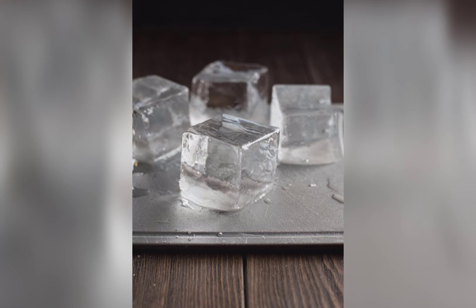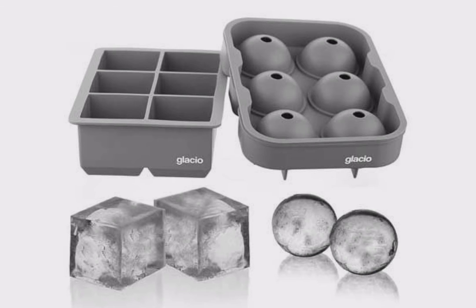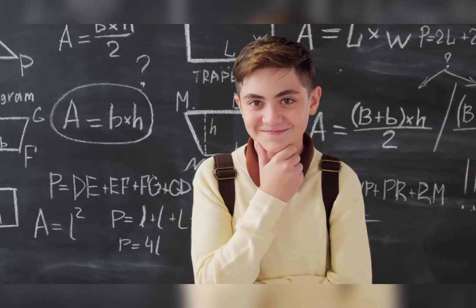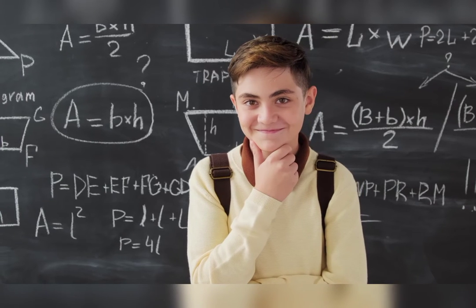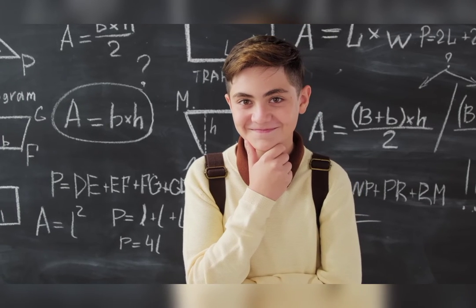Agar aap kabhi ek ice cube banate hain — agar aap usse tap water se banayein toh wo white color ka hoga, lekin boiled water se banayein toh wo transparent hoga.